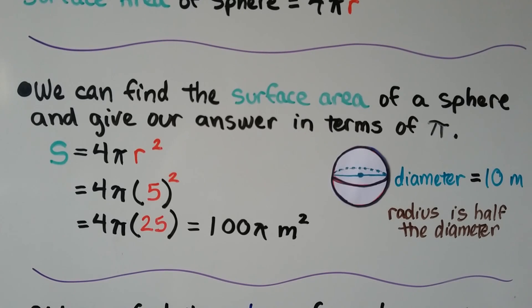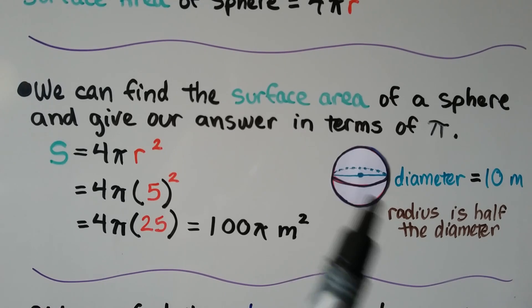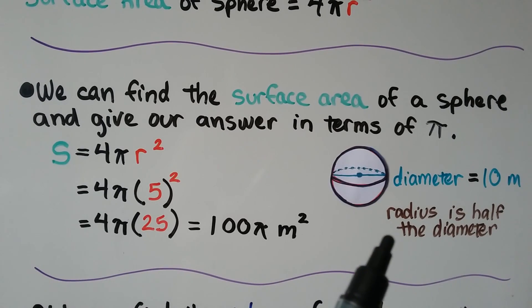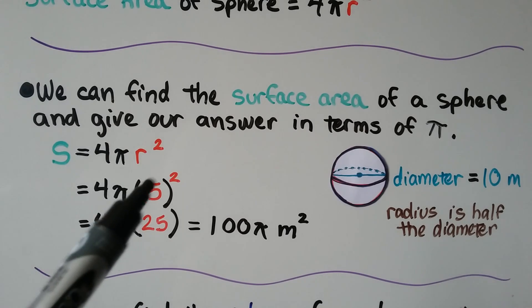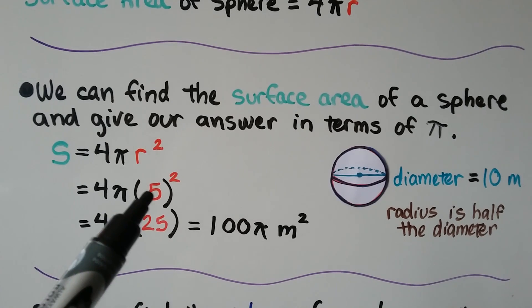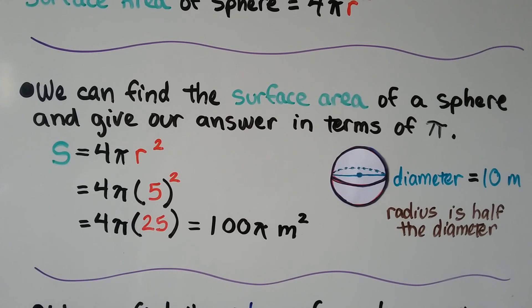We can find the surface area of a sphere and give our answer in terms of pi. In this diagram, the diameter is 10 meters, so the radius is 5 meters. Putting that into our formula gives us 4 times pi times 25, and multiplying 4 times 25 gives us a surface area of 100 pi meters squared.